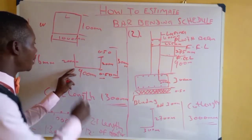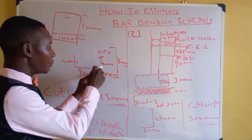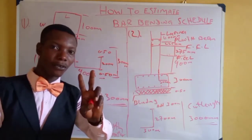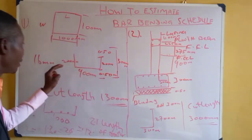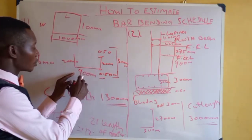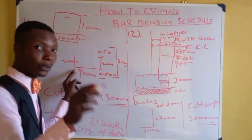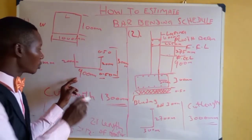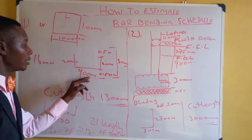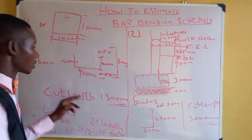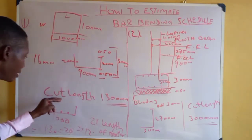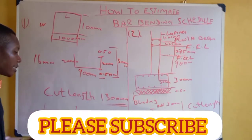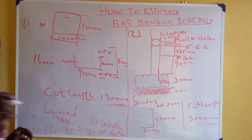At your vertical section you have 200mm — you bend 200mm on one side and 200mm on the other side. 200mm plus 200mm gives you 400mm. At the horizontal section you bend 900mm, so 900 plus 400 is 1,300mm. Your cut length should be 1,300mm.